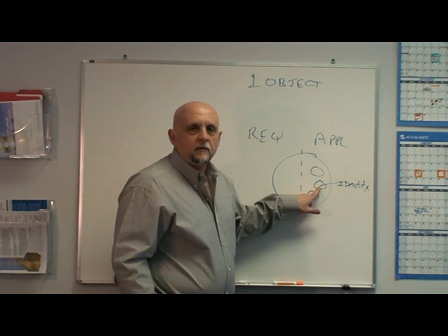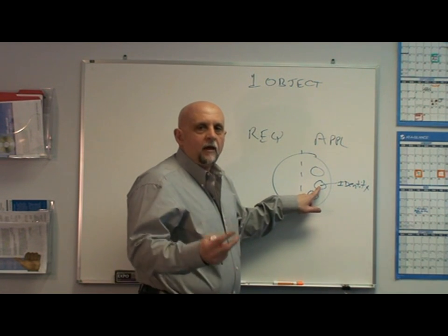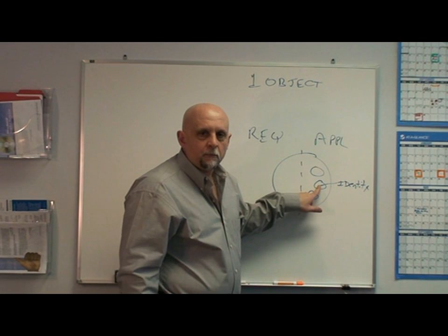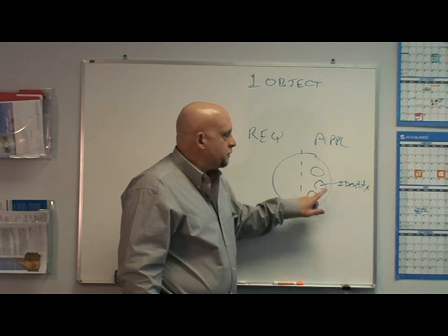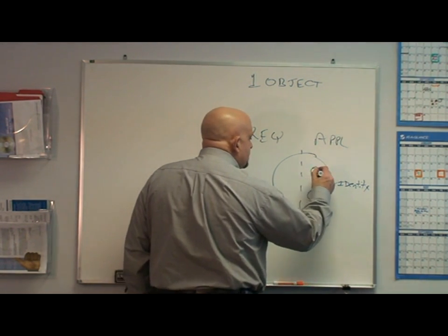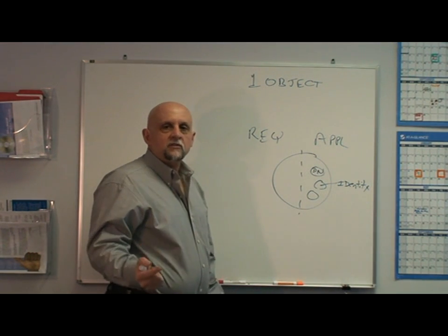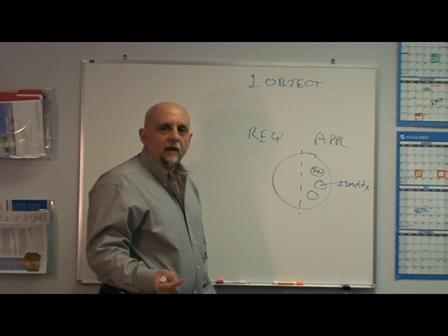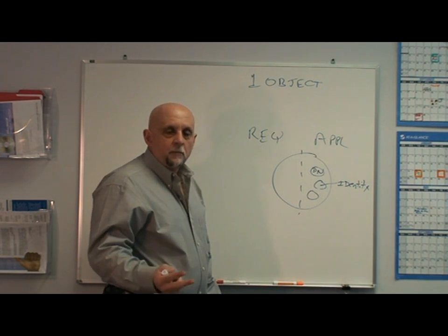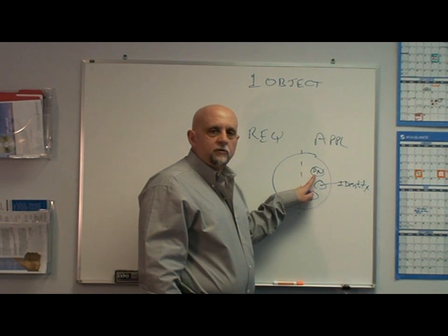The identity object contains things like manufacturer data, vendor ID, serial number, model number, descriptive string name — all the things that describe the device. There's also a DeviceNet object. The DeviceNet object has things like the DeviceNet MAC ID, which is the address on the bus, the baud rate being used, and everything concerned with the DeviceNet configuration.